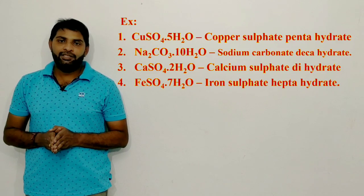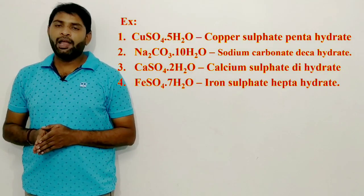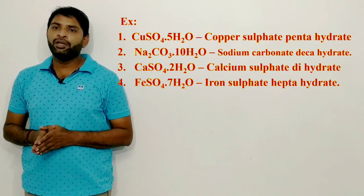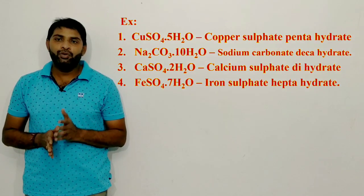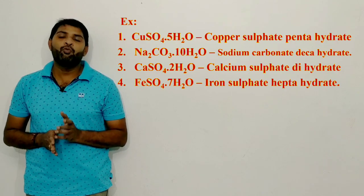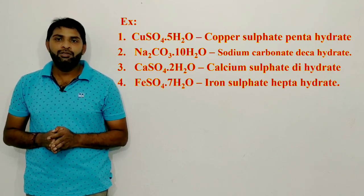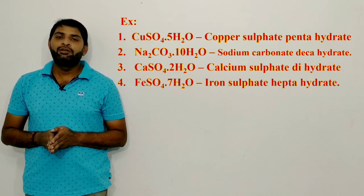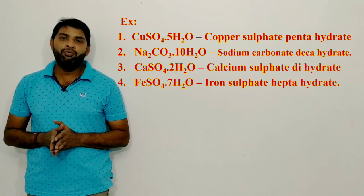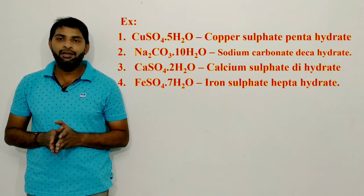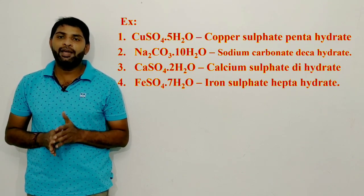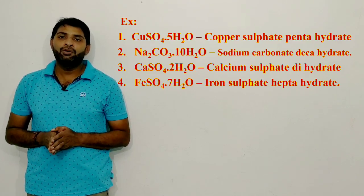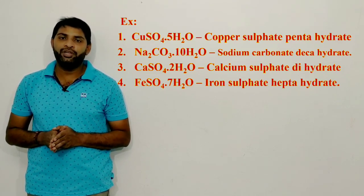Next, CaSO4·2H2O — calcium sulfate dihydrate. Di means 2, so 2 water molecules are present. Fourth, FeSO4·7H2O — iron sulfate heptahydrate. Hepta means 7, so 7 water molecules are present in this.